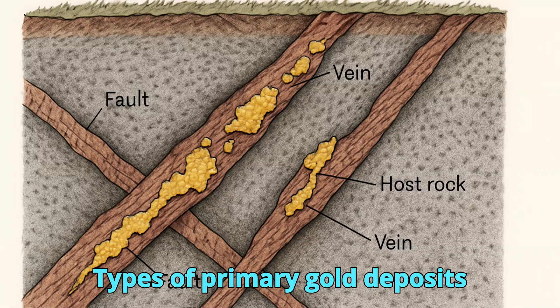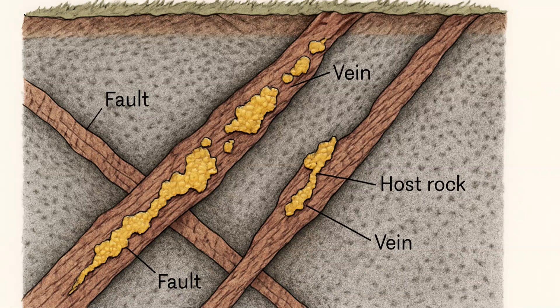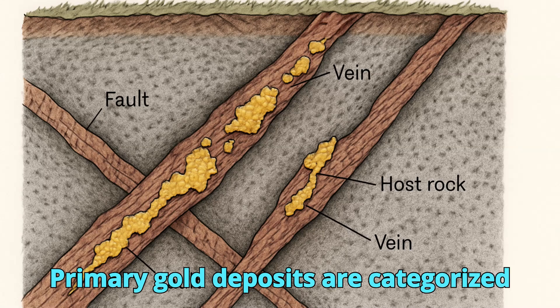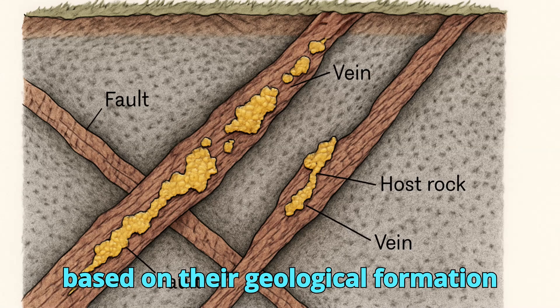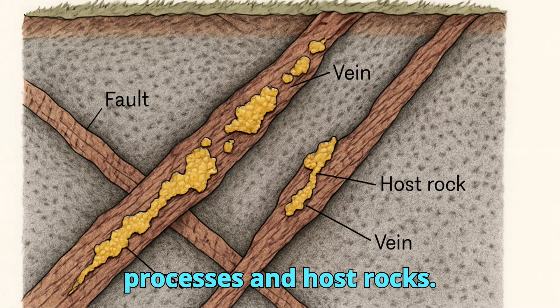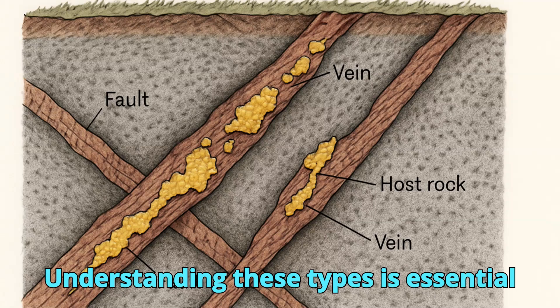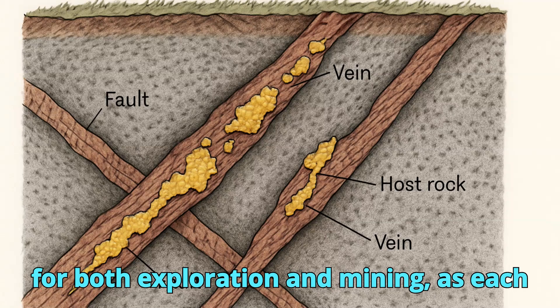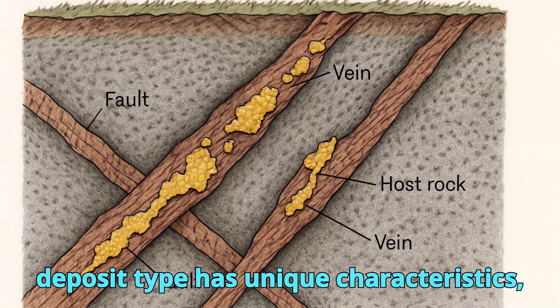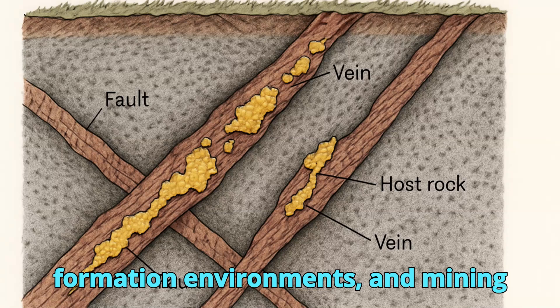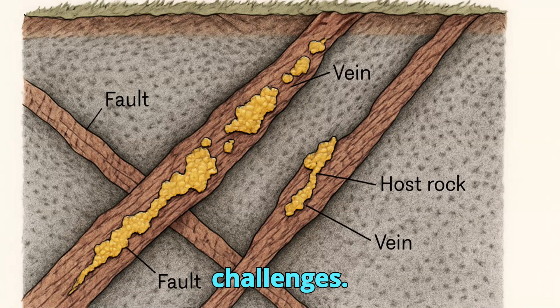Types of Primary Gold Deposits. Primary gold deposits are categorized based on their geological formation processes and host rocks. Understanding these types is essential for both exploration and mining, as each deposit type has unique characteristics, formation environments, and mining challenges. Here are the main types.